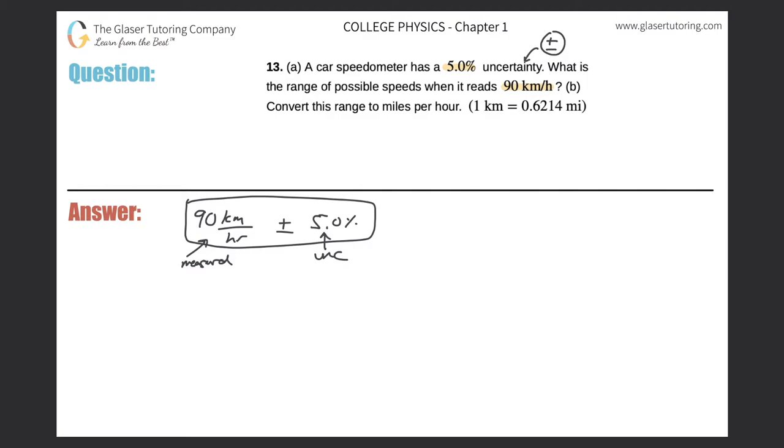So first question is, well, 5%, that's great. That's the uncertainty, but 5% of what, right? Percents are always of something. So 5% of the measurement, that's what they're talking about.